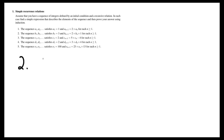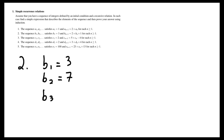For the second question, we can again look at values of b. We're given that b1 is equal to 3. b2 is double that plus 1, so that gives us 7. b3 is double that plus 1, so that's 15. b4 is 30 plus 1.